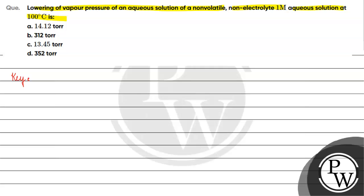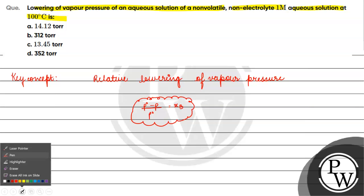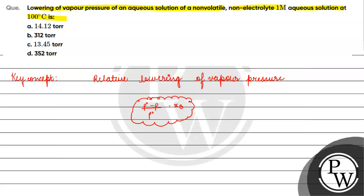The key concept for this question is relative lowering of vapor pressure. The formula is: P0 minus P, divided by P0, equals chi B. P0 is the vapor pressure of the pure solvent, P is the vapor pressure of the solution, and chi B is the mole fraction of the solute.